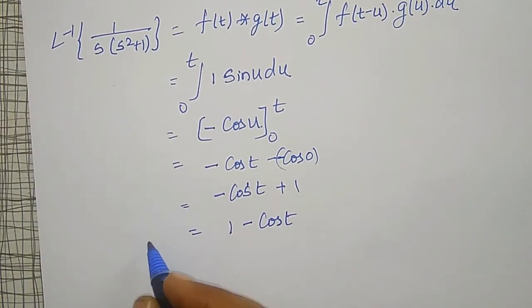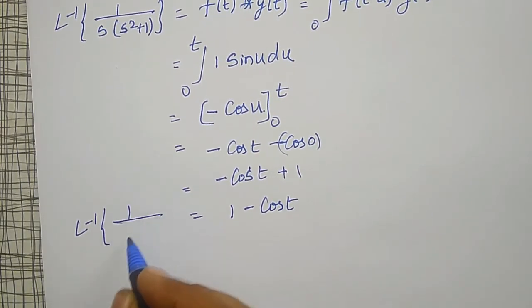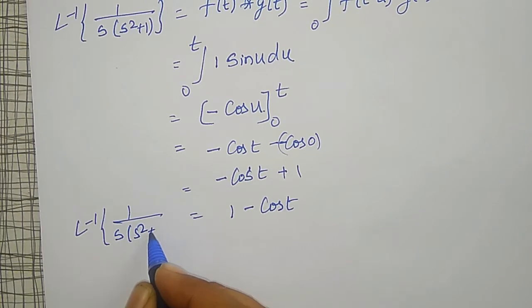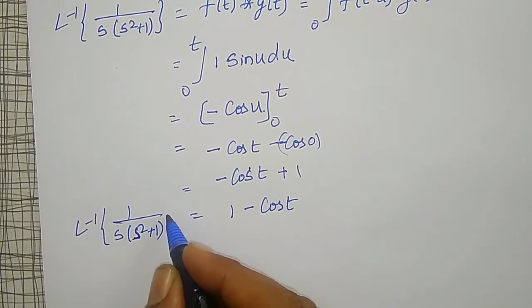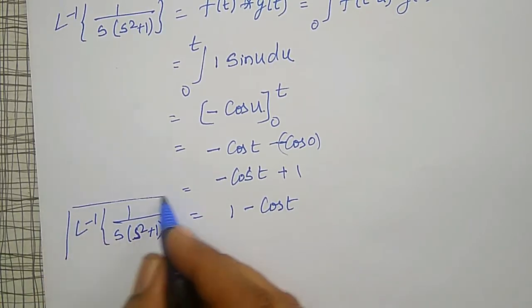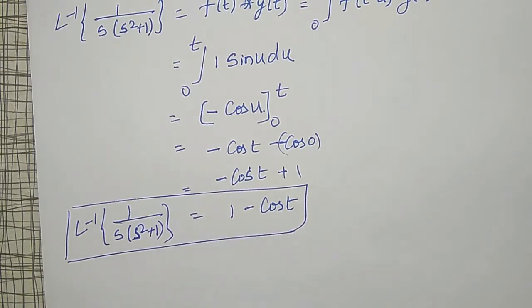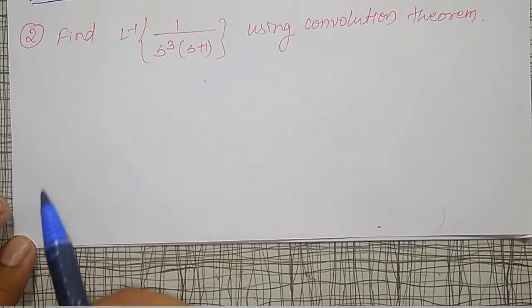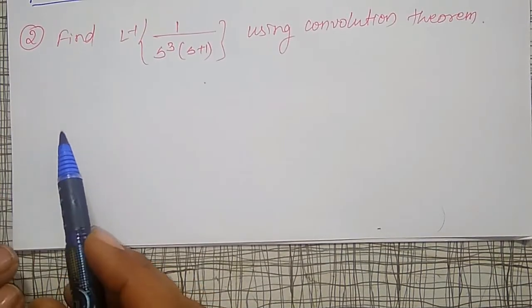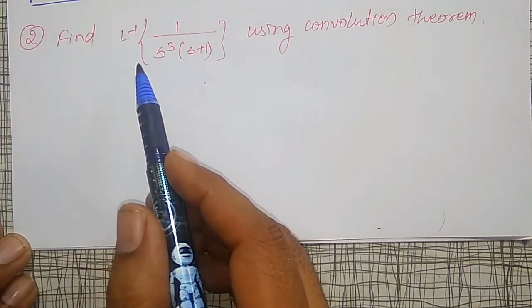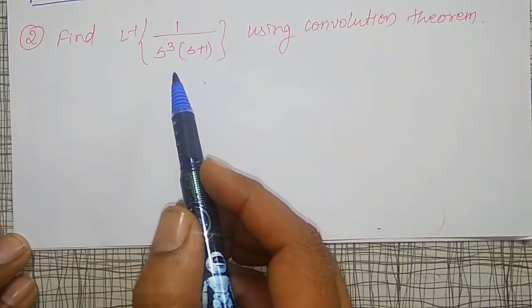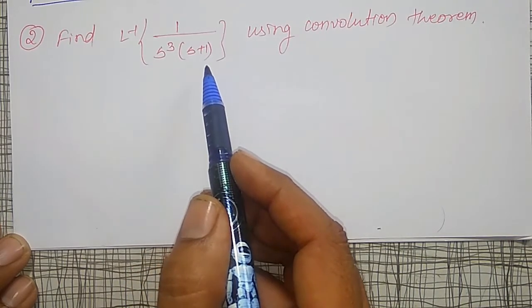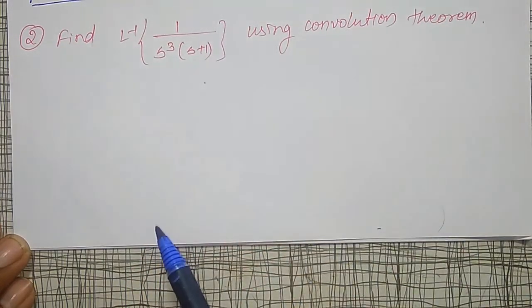Therefore, the inverse Laplace transform of 1/(s(s² + 1)) is 1 − cos(t). Very simple — you just need to know integration well, and then it becomes straightforward. Now let me do another example: find the inverse Laplace transform of 1/(s³(s + 1)) using the convolution theorem.